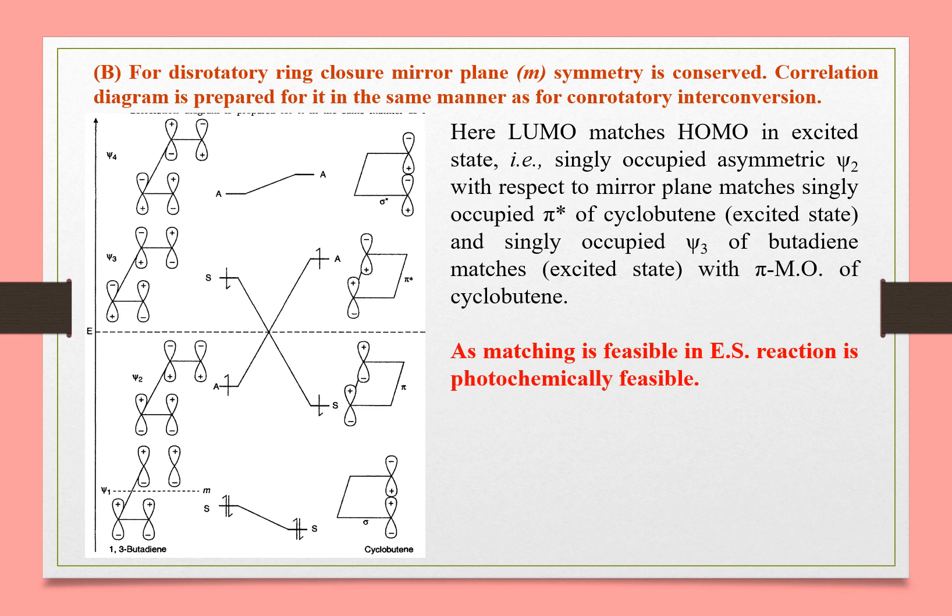LUMO matches HOMO in the excited state. The singly-occupied symmetric Psi2 with respect to the mirror plane matches the singly-occupied pi* of cyclobutene. Finally, the matching is feasible in the excited state, so the reaction is photochemically feasible.